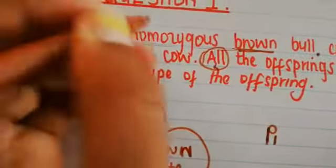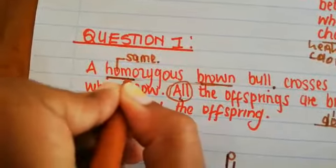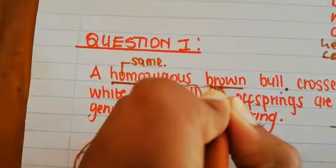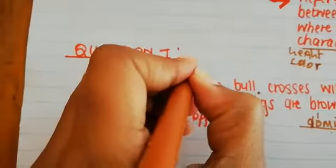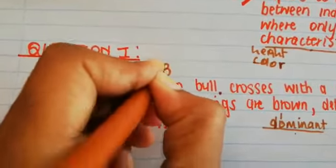So the fact that they said homo means that the alleles are the same. And if the alleles are the same and they are brown, and we know that brown is represented by capital letter B, then it means here we're going to have B and B.